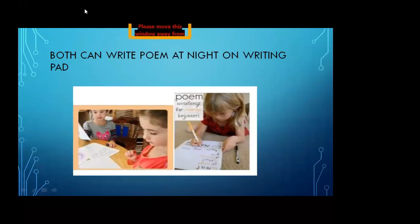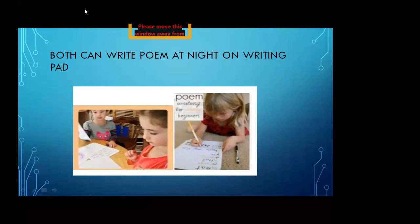Underline the word. Now come towards the last stanza. In the first line there is the word A-L-L-O-V-E-R — all over. Underline this word. In the third line of the same stanza, there is F-A-R — far. Underline this word. In the same line, the last word is C-L-E-A-R — clear. Underline this word.